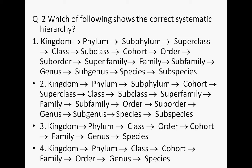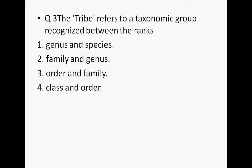In the fourth alternate, cohort is between class and family. Since cohort should be between class and order, the first answer is the correct one. Regarding 'tribes': this taxonomic group is recognized between the ranks of genus and species, family and species, order and family, or class and order — the answer should be family and genus.